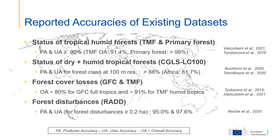In these studies, the accuracies of the products have been reported at large scale. For the status of tropical humid forests, producer and user accuracy are higher than 80–90%, with TMF at 91.4% and primary forest above 98%. For the Copernicus 100-meter land cover, forest classes show producer and user accuracy above 88%. For forest cover loss, overall accuracy is about 80% for the full tropics and 91% for the humid tropics. For the REDD alert on forest disturbance, producer accuracy is 95% and user accuracy is 97.6%.